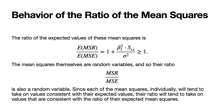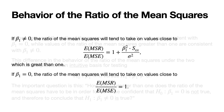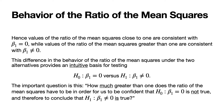The mean squares themselves are random variables, and so their ratio, MSR over MSE, is also a random variable. Since each of the mean squares individually will tend to take on values consistent with their expected values, their ratio will tend to take on values consistent with the ratio of their expected mean squares. If beta1 is not equal to zero, the ratio of the mean squares will tend to take on values close to one plus beta1 squared times S sub xx over sigma squared, which is strictly greater than one. If beta1 equals zero, the ratio will tend to take on values close to one. Hence, values of the ratio close to one are consistent with beta1 being zero, while values greater than one are consistent with beta1 being nonzero.